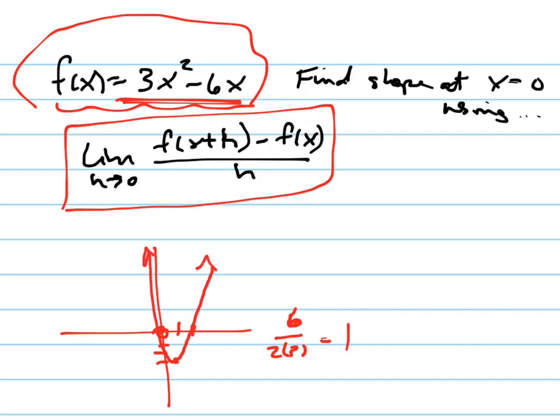And they're asking us to find the slope at x equals 0. So I'm going to show you what I'm going to be looking for. It's this point right here. I'm trying to find the slope of the tangent line at that point, which means that the line is going to look something like this. Is that a positive or negative slope? It's a negative slope.